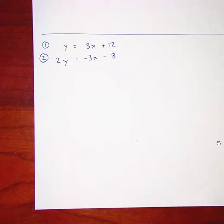In this problem, we are looking at solving a linear system — that is, two equations with two unknowns — using elimination. That is where you eliminate one of the variables.